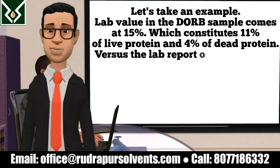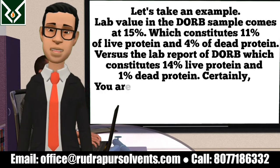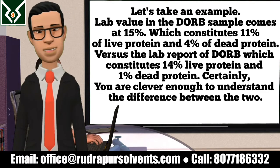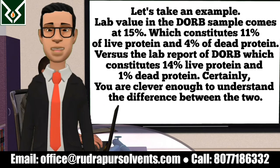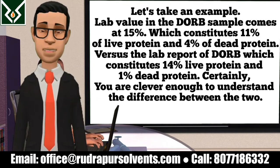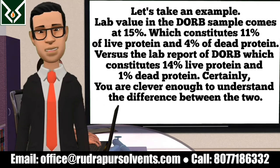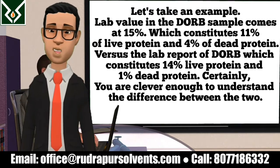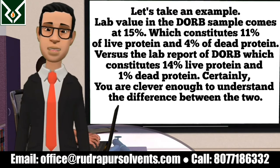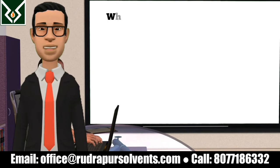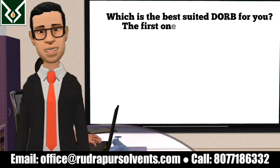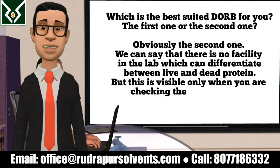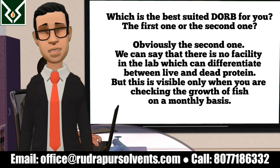Let's take an example. A DORB sample comes at 15% lab value, which constitutes 11% live protein and 4% dead protein, versus another DORB lab report showing 15% total constituting 14% live protein and only 1% dead protein. Certainly, you are clever enough to understand the difference. Which is the best suited DORB for you — the first one or the second one? Obviously the second one.